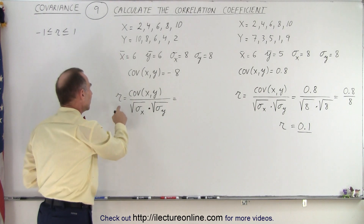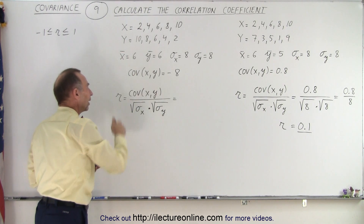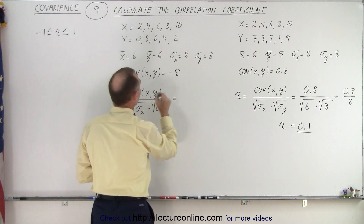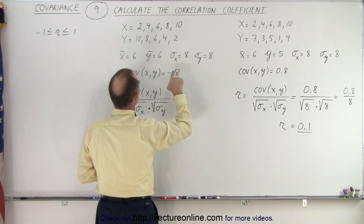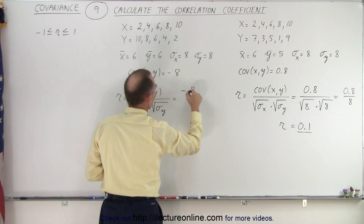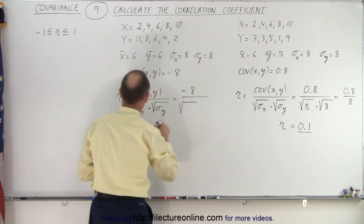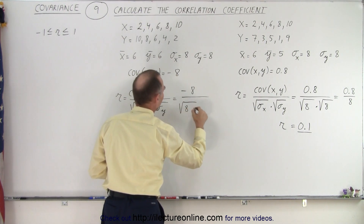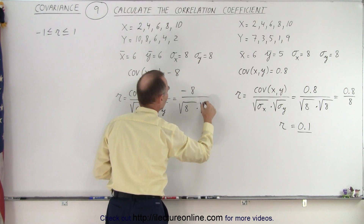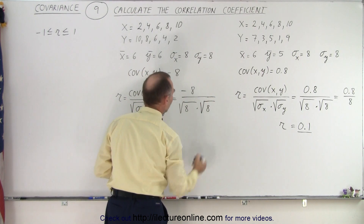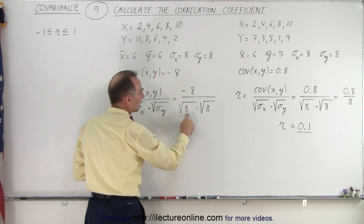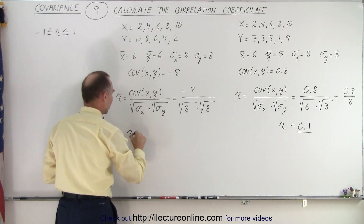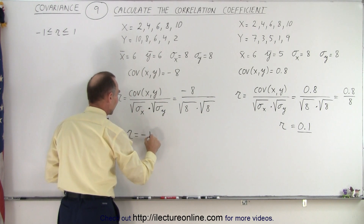Now let's calculate the correlation coefficient for these two data sets. We have the covariance, which is negative 8, divided by the square root of the variance in X — which is 8 — and the square root of the variance in Y — which is also 8. The denominator is 8, so negative 8 divided by 8 means the correlation coefficient is negative 1.